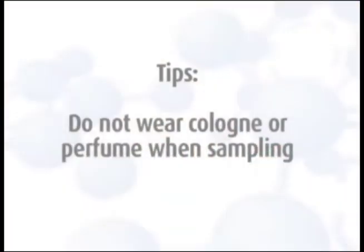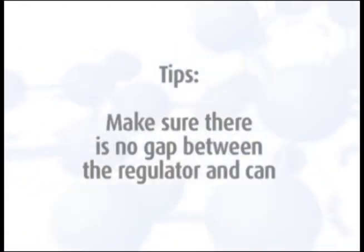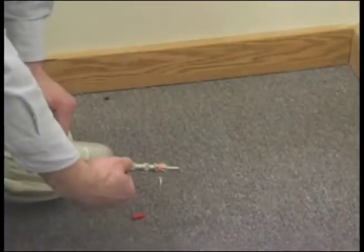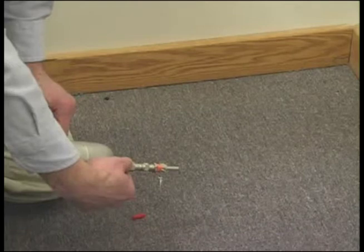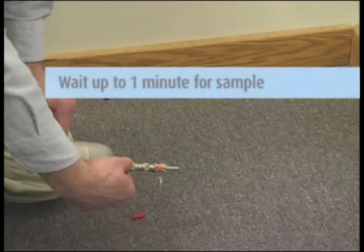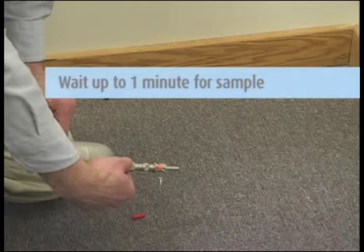Tips: Do not wear cologne or perfume when you perform the sampling. It could interfere with the sample results. Make sure there is no gap between the regulator and can. If there is, the regulator is not seated and you will need to remove and reposition the regulator. You may or may not hear the vacuum pulling in the sample. This will take 20 to 30 seconds to complete. Wait one minute to be sure the sample collection is complete.